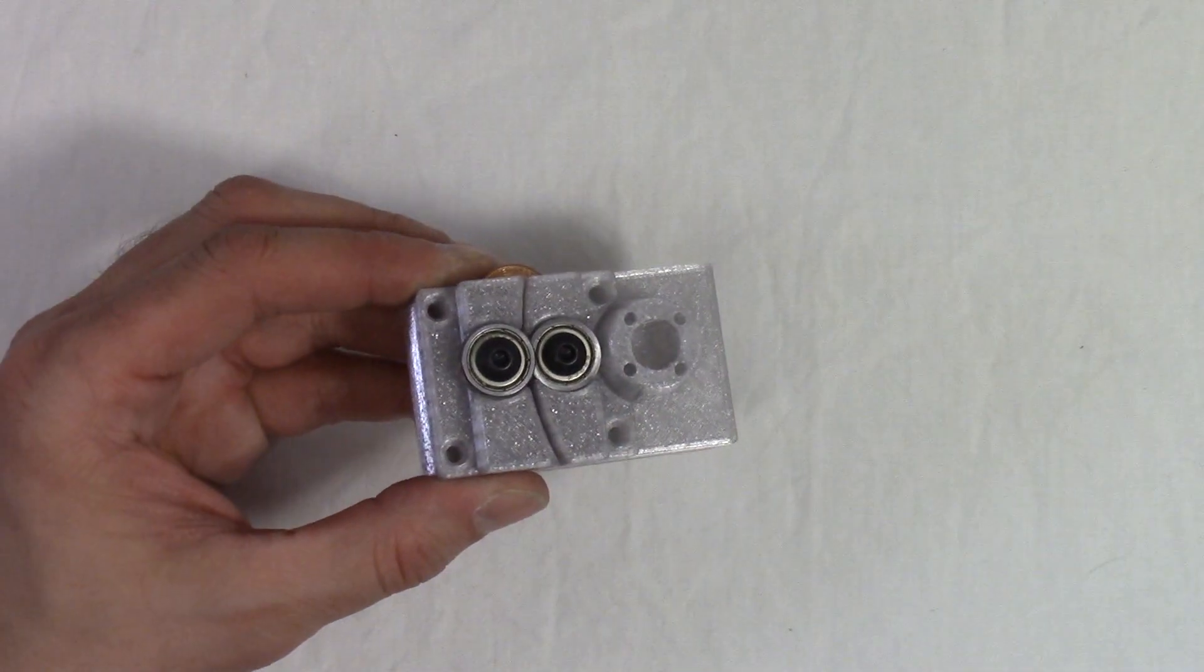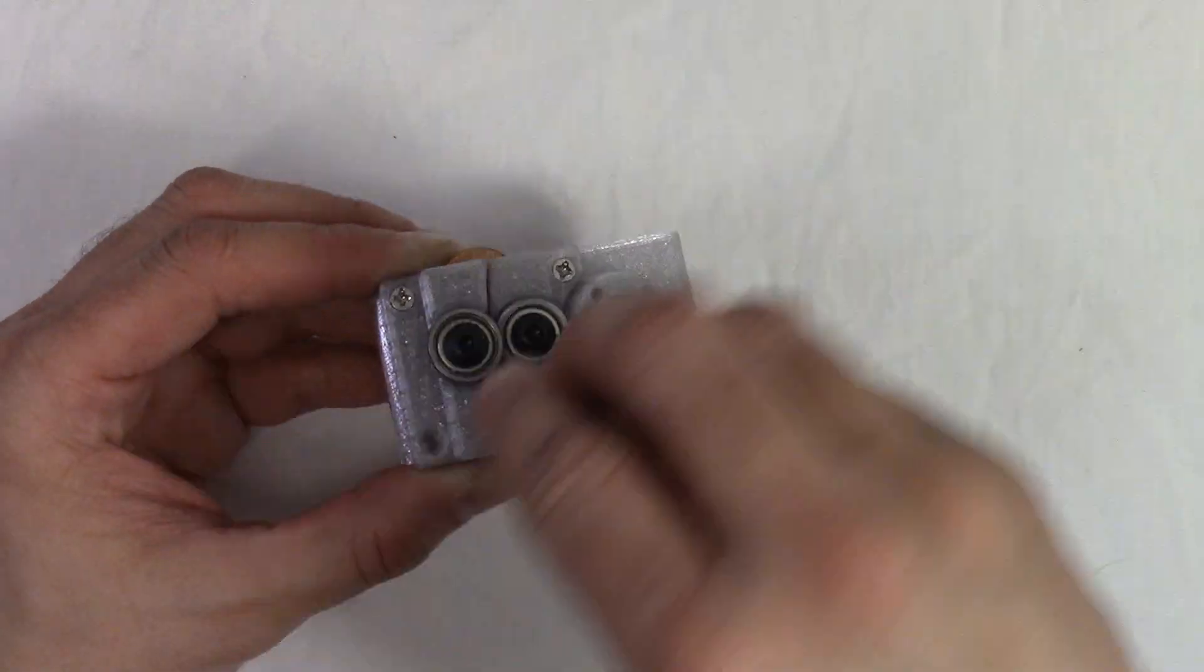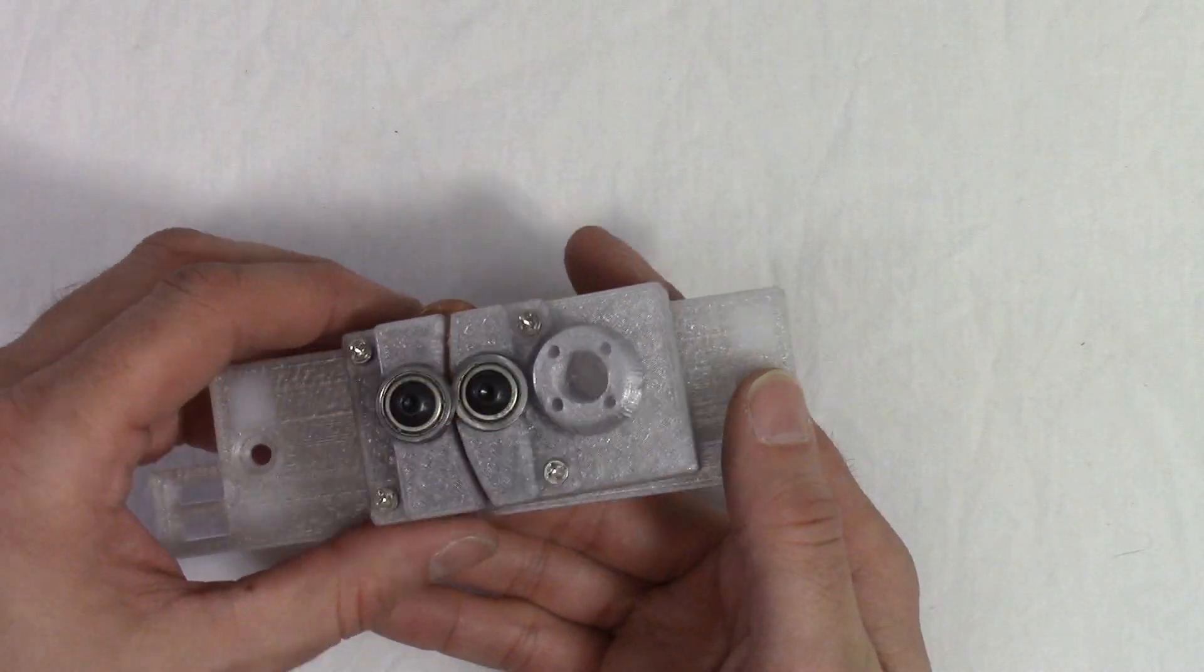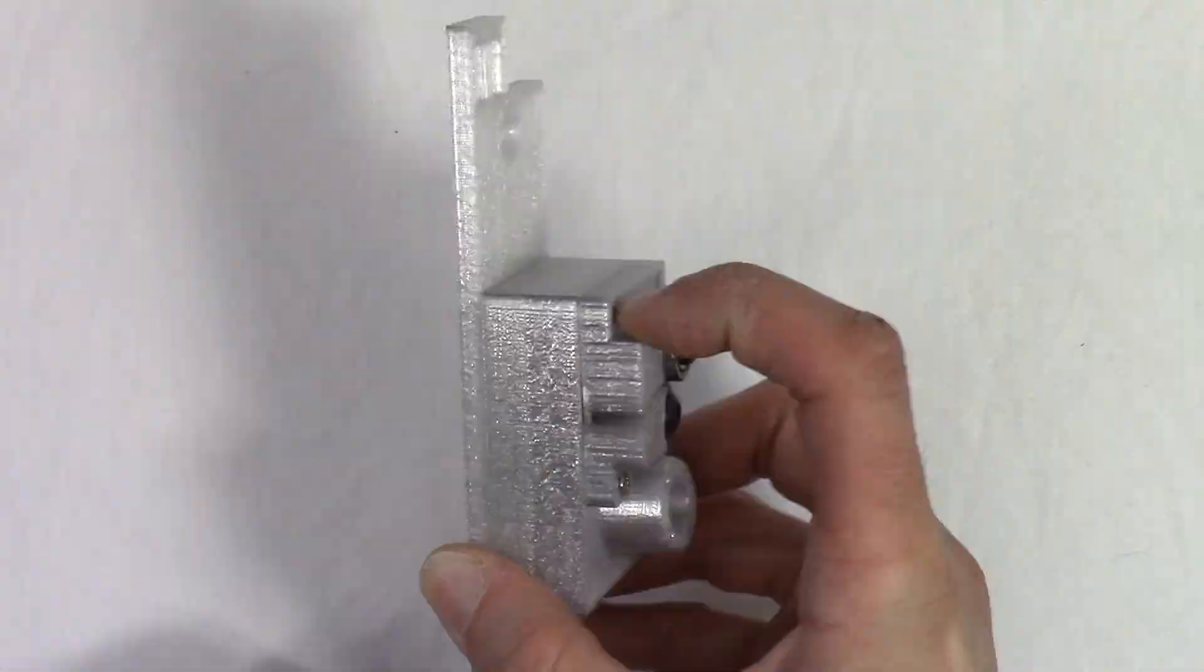Insert the four M3 by 30 screws into the top of the combined top and middle pieces. Connect them to the bottom printed parts and add the M3 nuts and lock the screws in place.